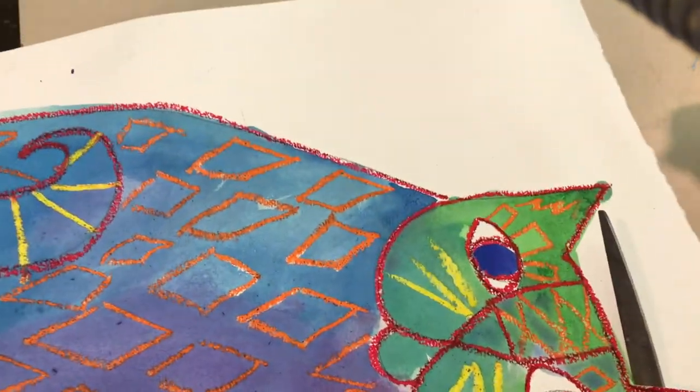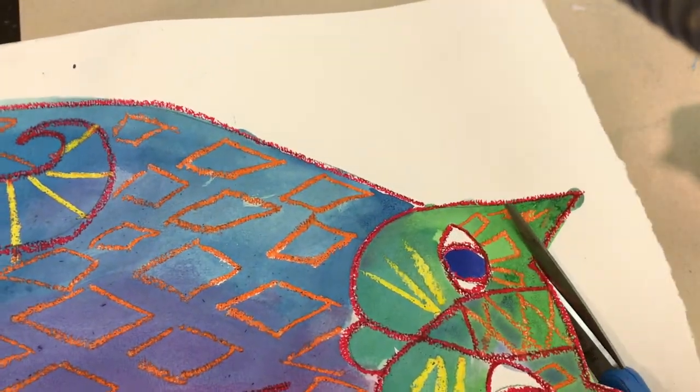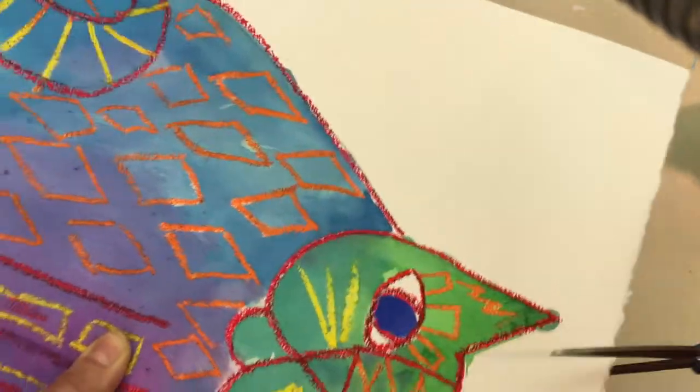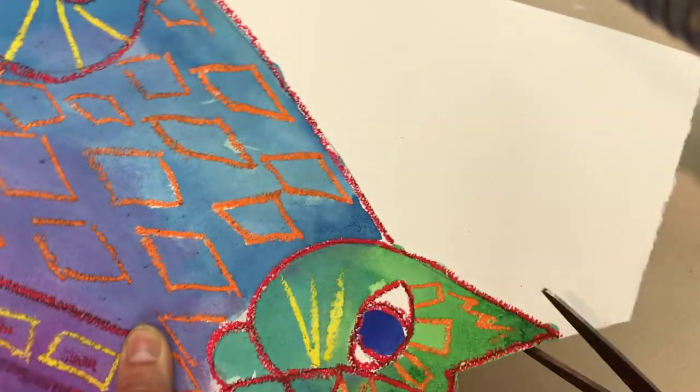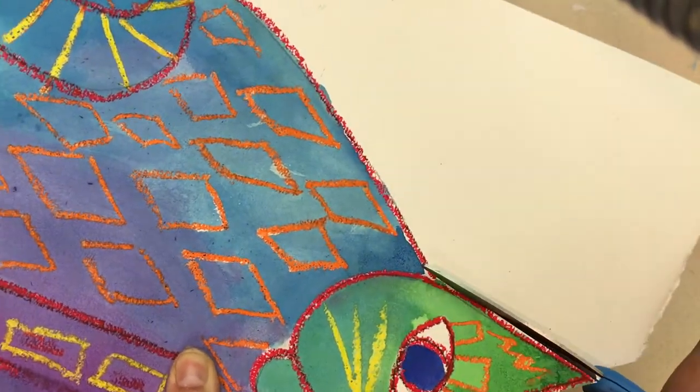I use my scissors and I start at the top and I slowly cut around the body of the cat. I don't want to cut too much of the outlined oil pastel because I want to keep that remaining red.